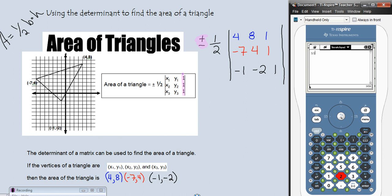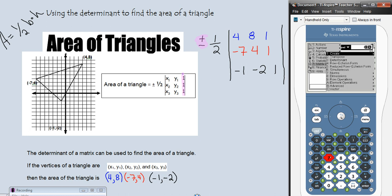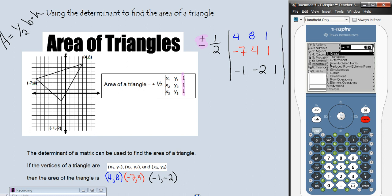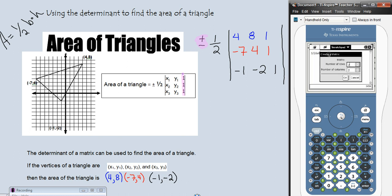And we want to find the determinant of a matrix. So we're going to go menu, action, oh excuse me, escape, menu, number seven. And number three is determinant. So that will pull the D-E-T out in front there. And now we need to put our matrix in. So we go back to menu, back to number seven, to number one, create, and number one, a matrix.